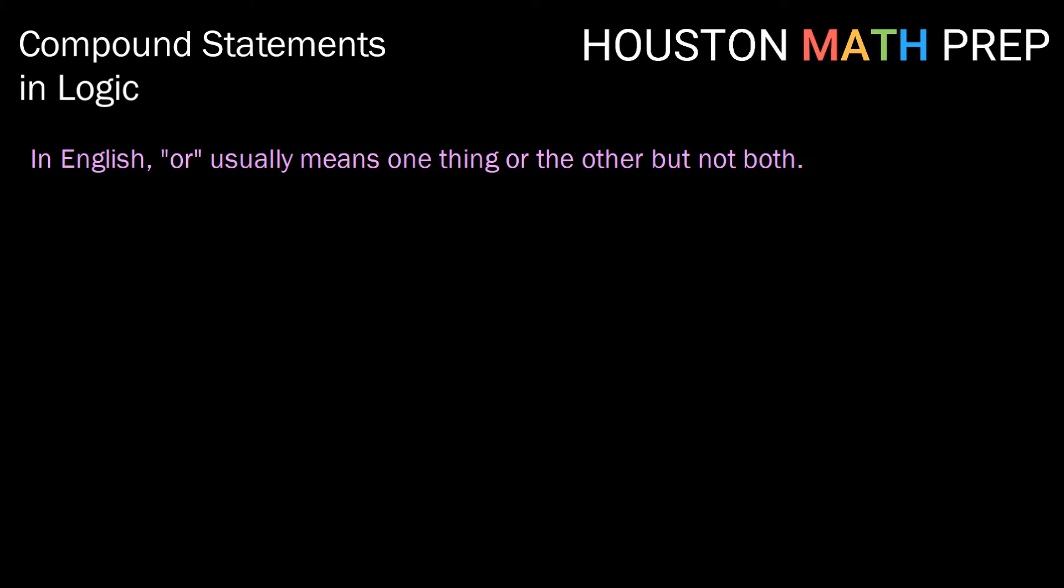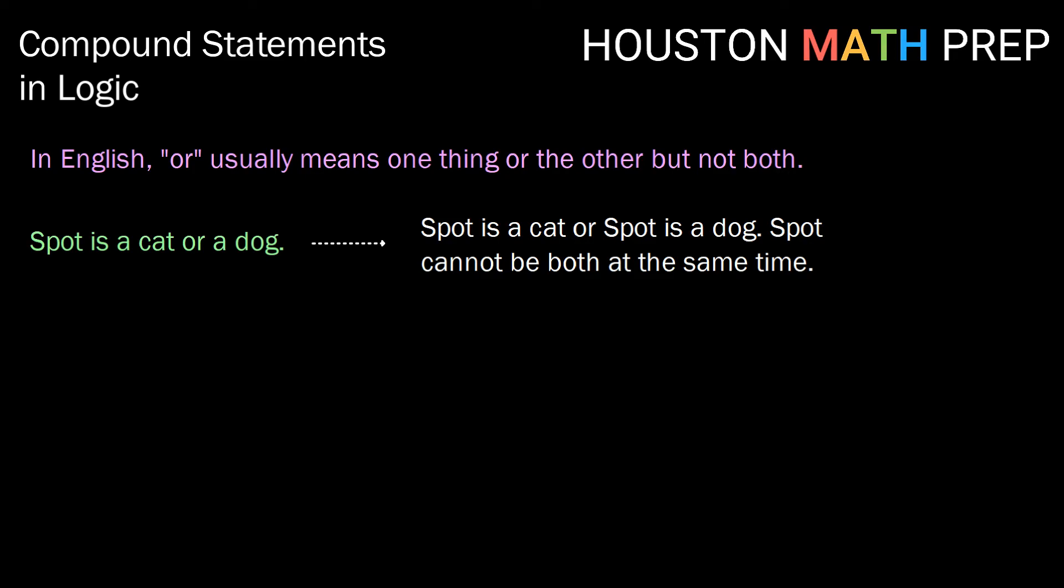When we use the word or in English we typically mean that something is one thing or the other but not both. So for example, Spot is a cat or a dog in English means Spot is a cat or Spot is a dog. But Spot cannot be both a cat and a dog at the same time.